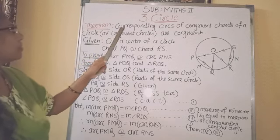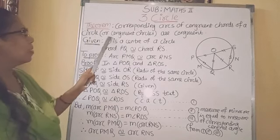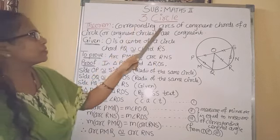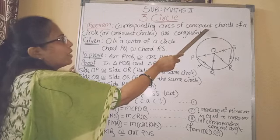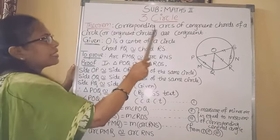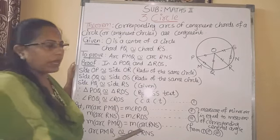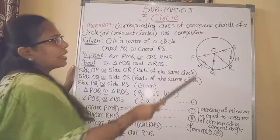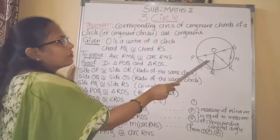Next theorem: the statement is — corresponding arcs of congruent chords of a circle or congruent circles are congruent. In this theorem, the chords are given congruent and we have to prove their corresponding arcs are congruent. So, we draw a circle with two congruent chords, joining the endpoints of these chords with the center to form two triangles.